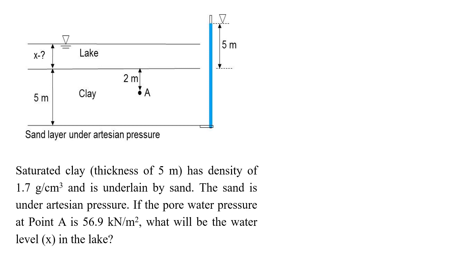Let's look at the setup that we have. We have 5 meters of clay, and on top of clay we have a lake. Below the lake, there is a sand layer, and this layer is under artesian pressure. How do we know that? When we install a piezometer here, you see that water will go all the way up. So the level will be here, which is 5 meters above the top of the clay layer.